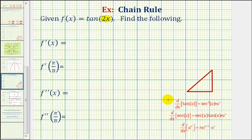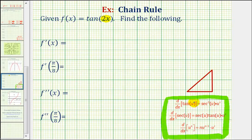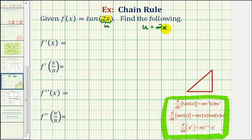The derivative formulas that we need are given below in red. Notice how each derivative formula includes the chain rule, where the inner function is equal to u, and therefore the derivative is a product where the first factor is the derivative of the outer function, and the second factor, u prime, is the derivative of the inner function. Since the inner function is equal to 2x, we'll let u equal 2x. So we also have to find u prime, the derivative of u with respect to x, which in this case would just be 2.